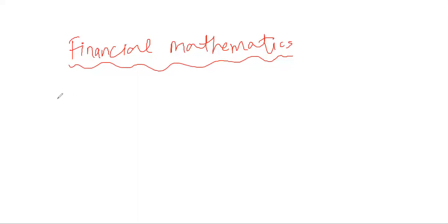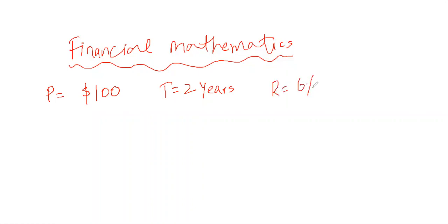Simple interest is basically when you are depositing a principal amount of, let's say, a hundred dollars into your bank account and keeping that money for a period of two years. The bank says they will give you a profit at the rate of six percent per annum. At the end of the first year you get six percent on a hundred dollars, and at the end of the second year you again get six percent on your original principal amount of a hundred dollars. That is basically simple interest.